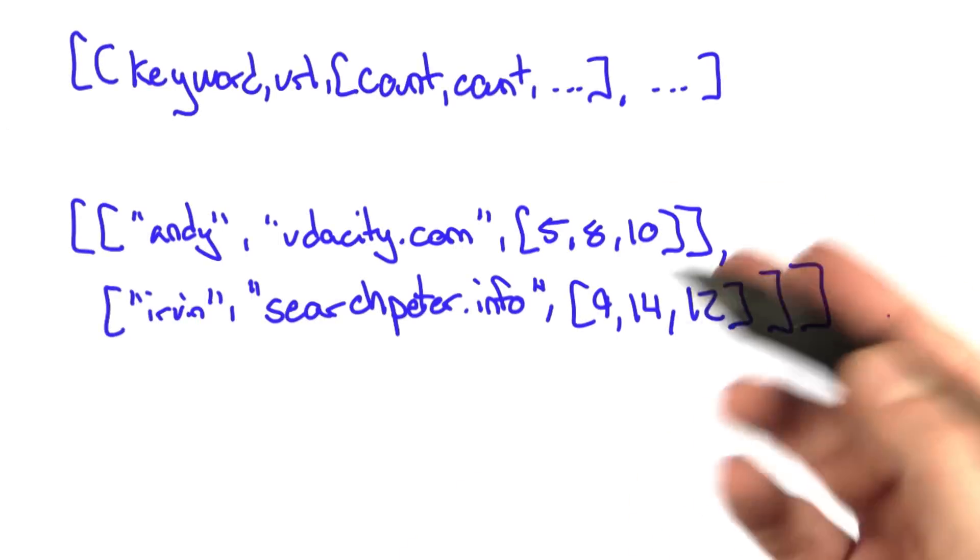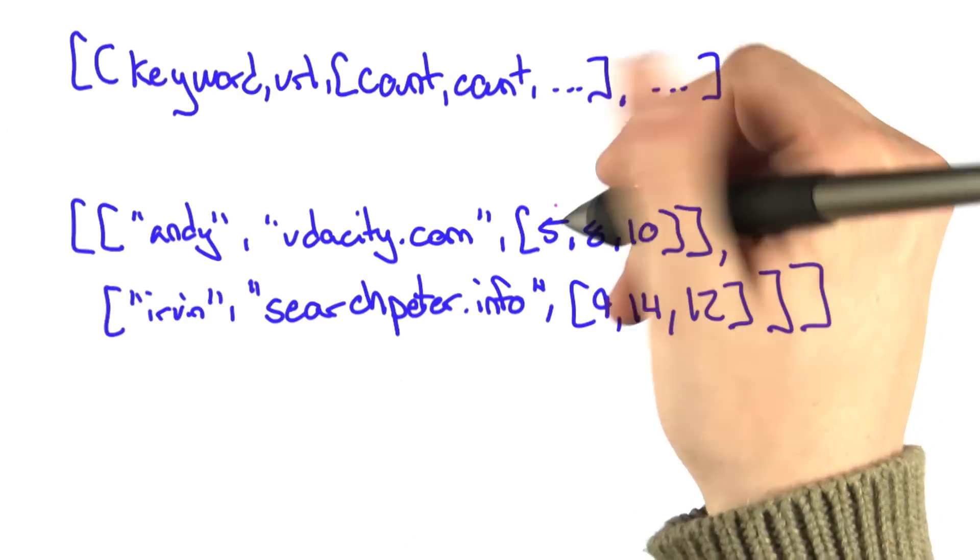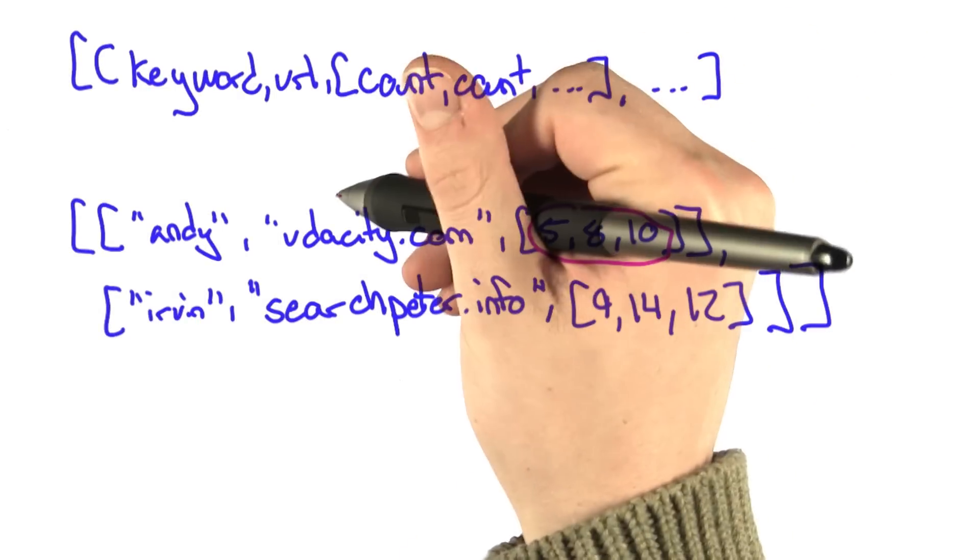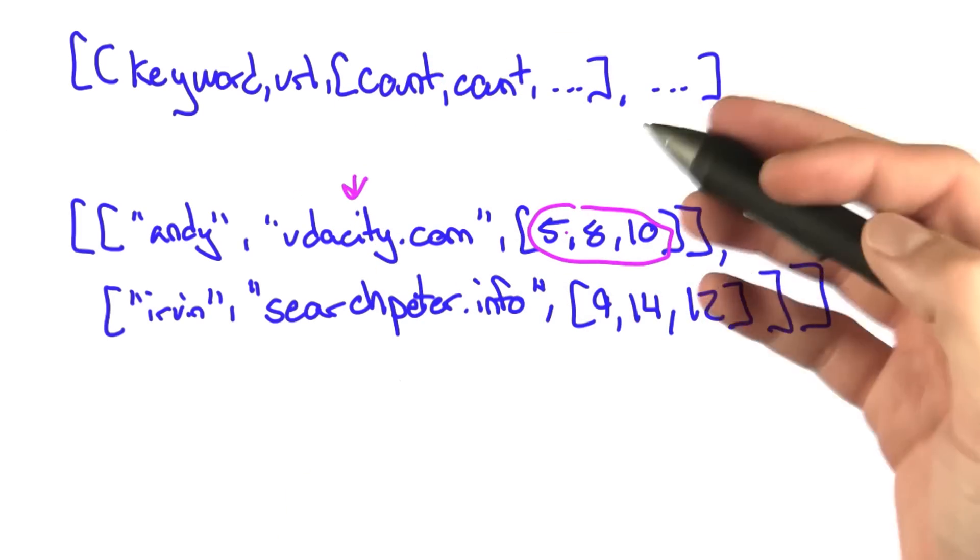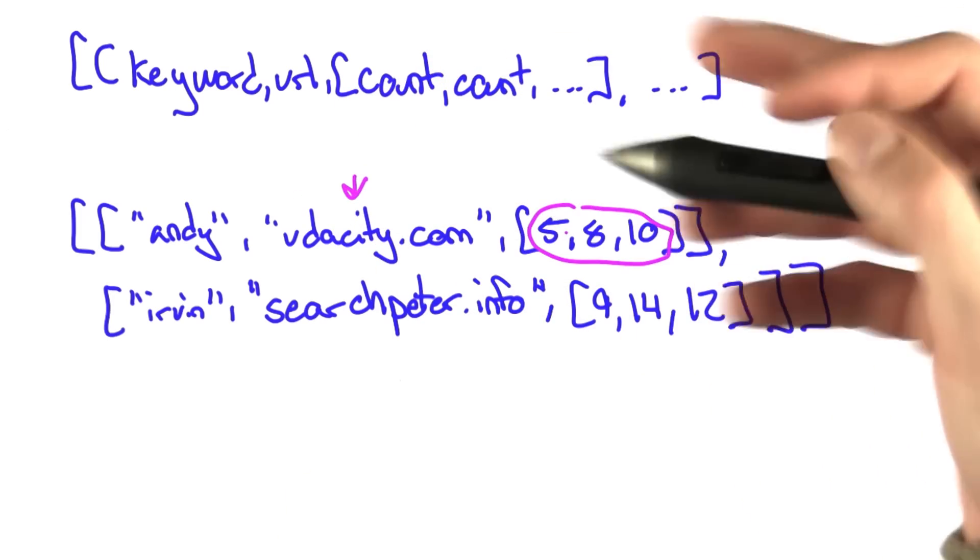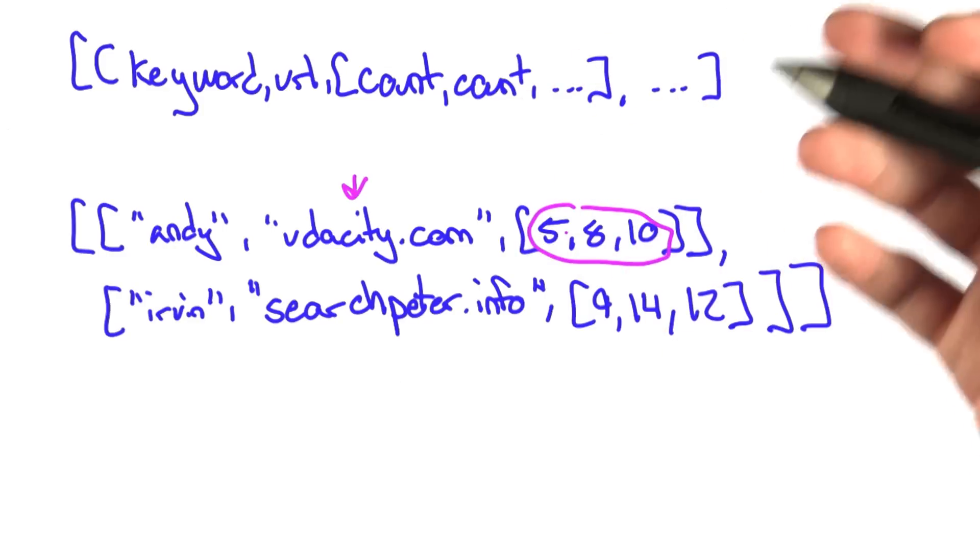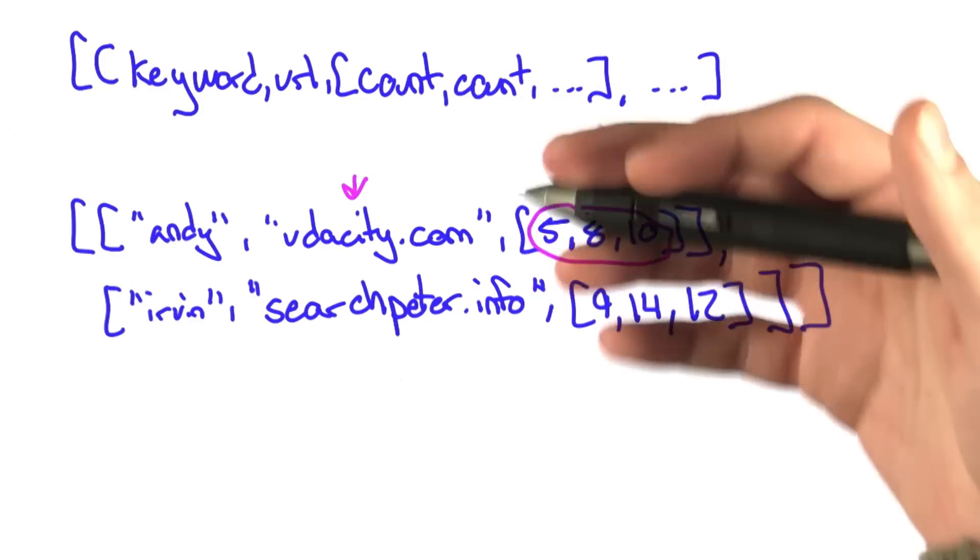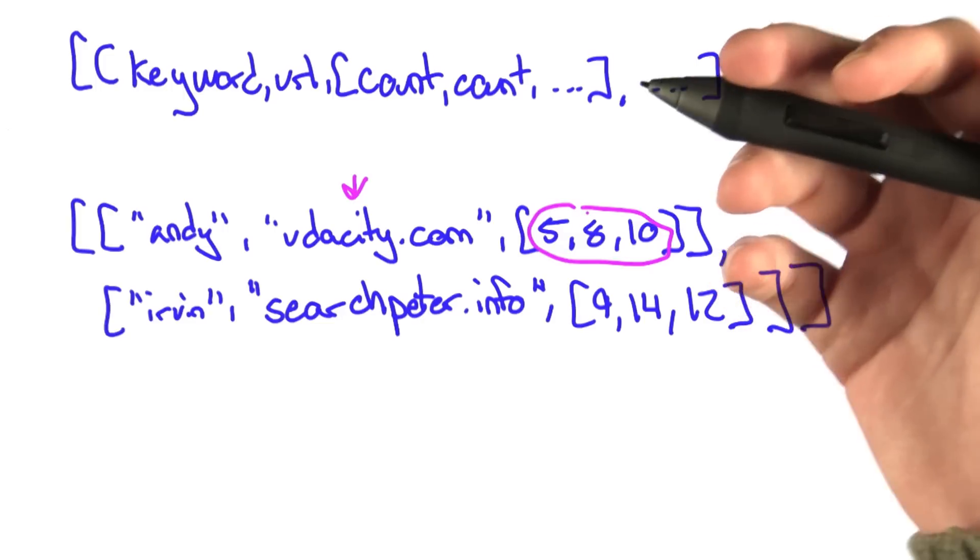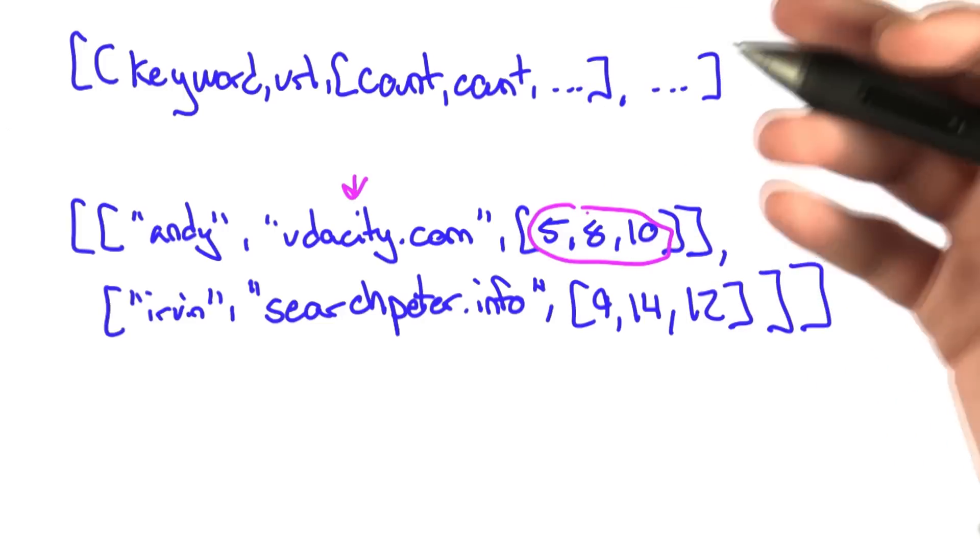This data structure doesn't really make that much sense. Why do we have multiple counts corresponding to a single URL? You could imagine a use for it. Maybe that each count corresponds to a certain period of time. But given what we have here, it's probably not the best data structure for exactly what we want to do, and that is just sort the query's results based strictly on the number of clicks.